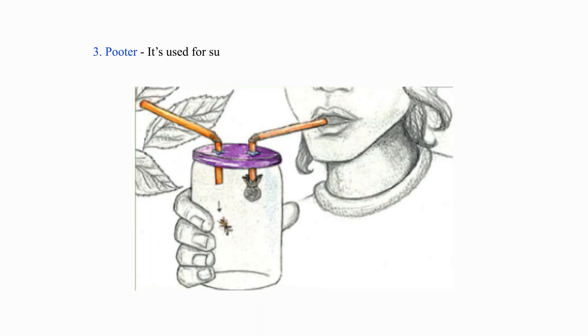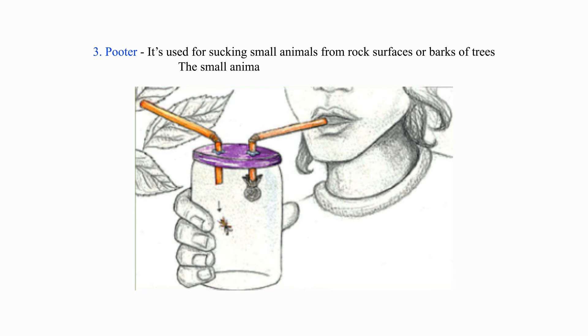3. Pooter — it is used for sucking small animals from rock surfaces or barks of trees. The small animals include ants, flies, bugs, etc.